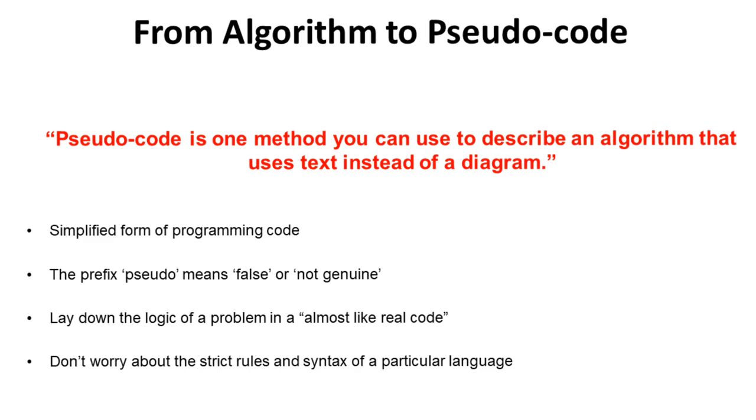So, pseudocode is just another method you can use to describe an algorithm. This time, though, it uses text instead of a diagram. You can think of pseudocode as a simplified form of program code. And indeed, the prefix pseudo means false or not genuine. So, it's false or not genuine code. Pseudocode basically allows you to write down the logic of a problem in an almost real-like code way. But you don't have to get bogged down in remembering the strict rules and the syntax of one particular language.